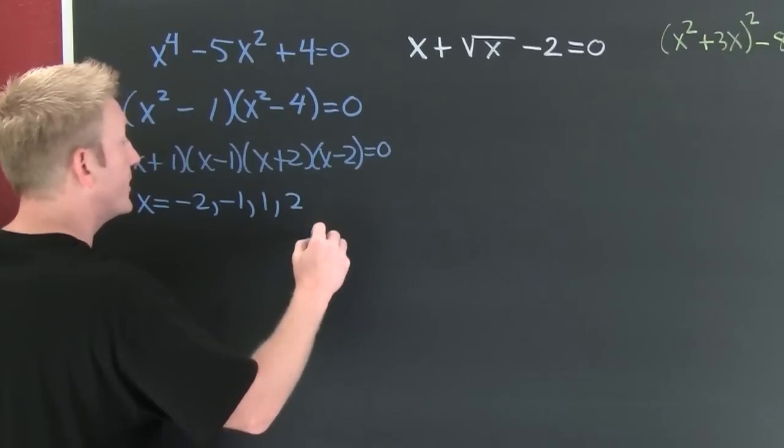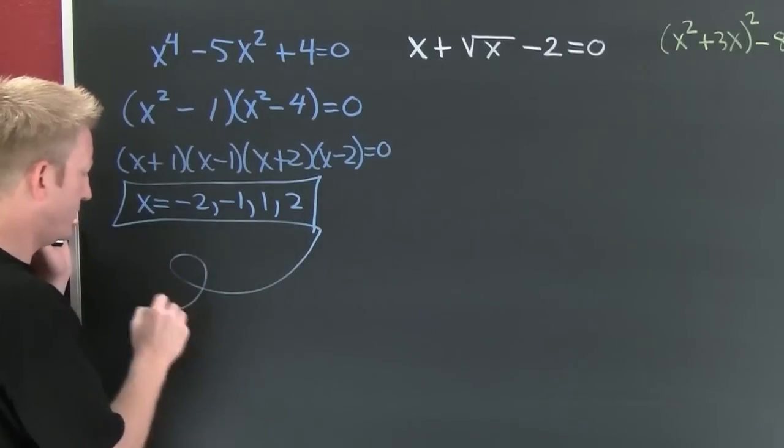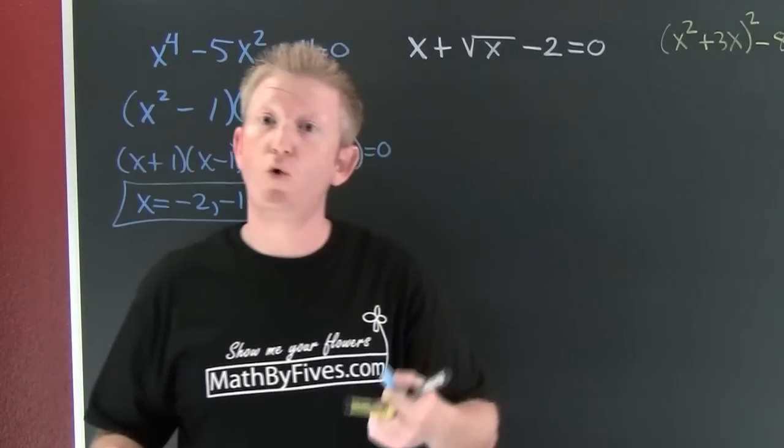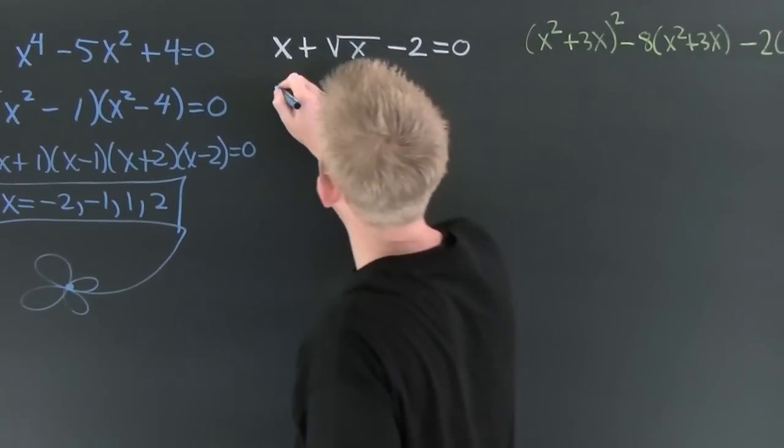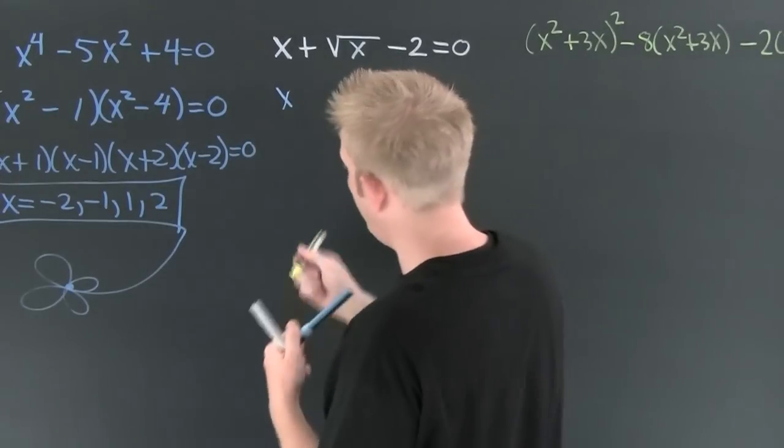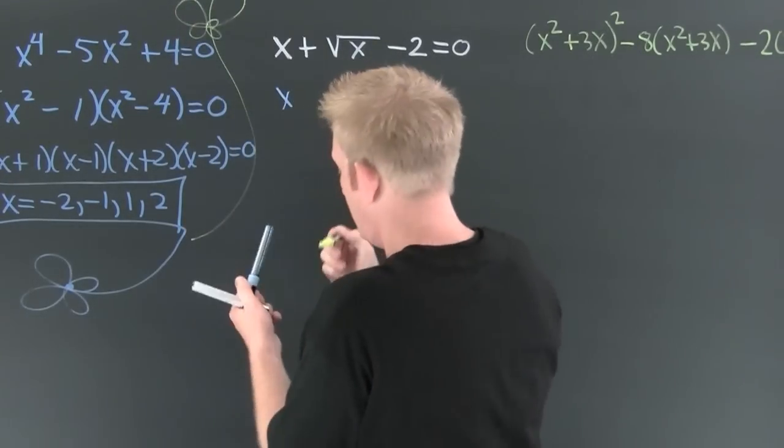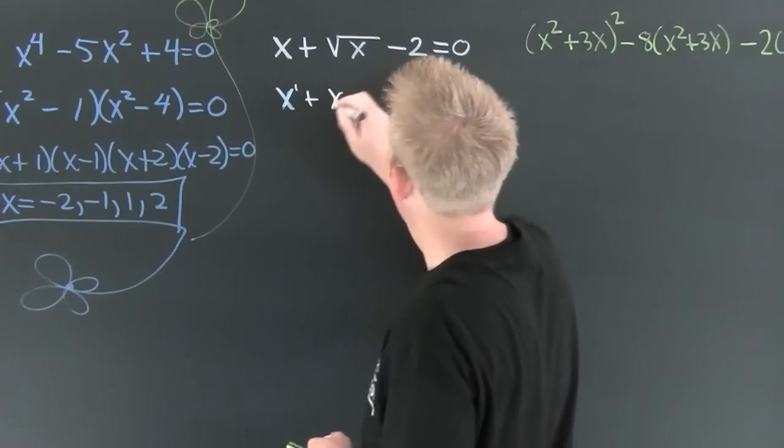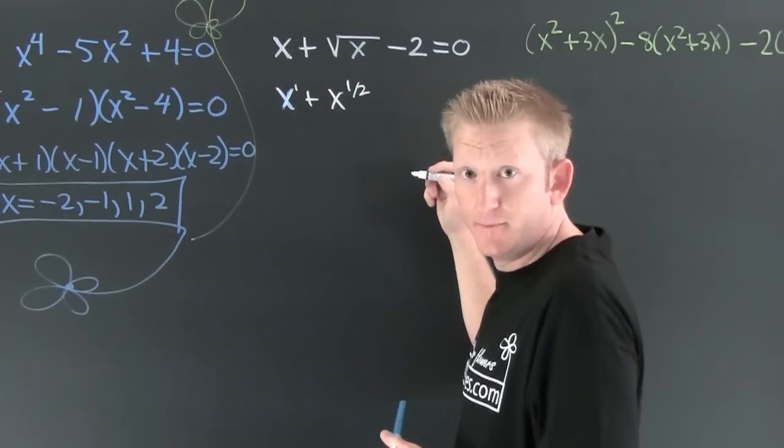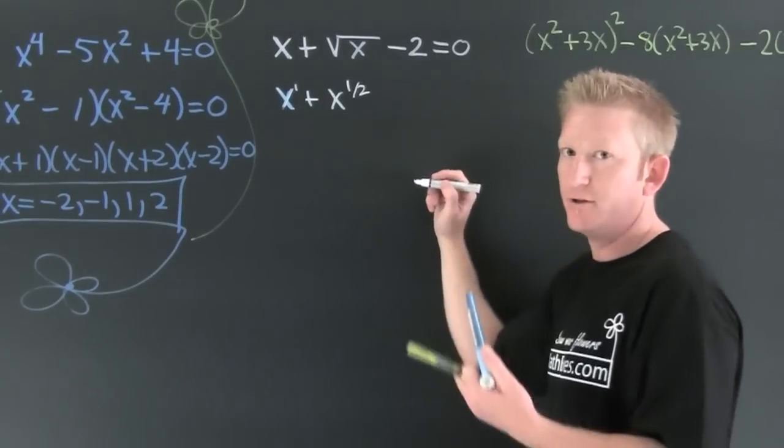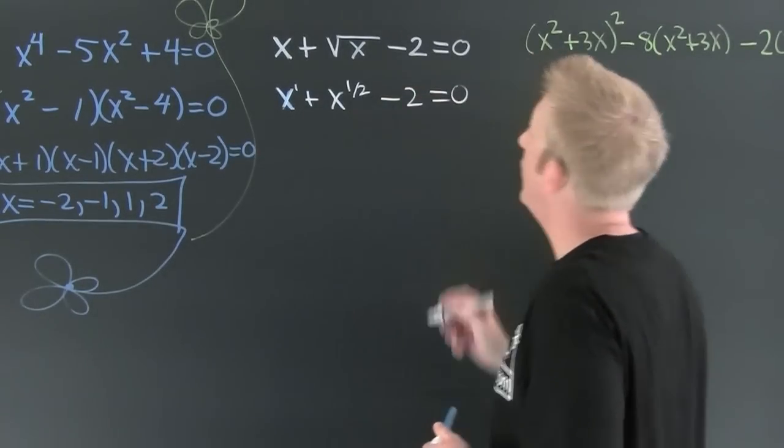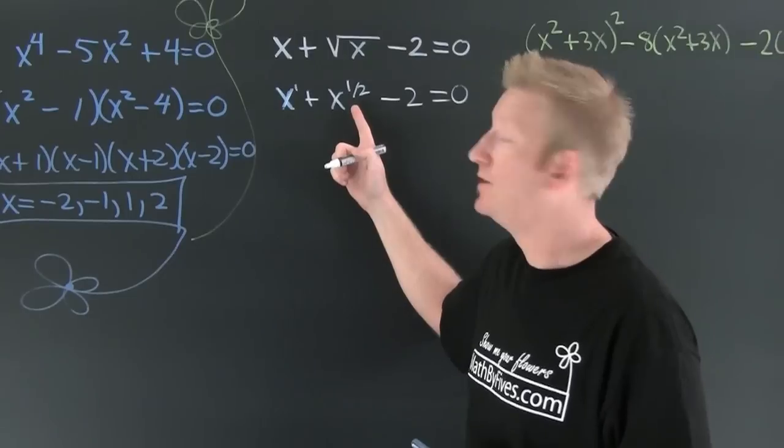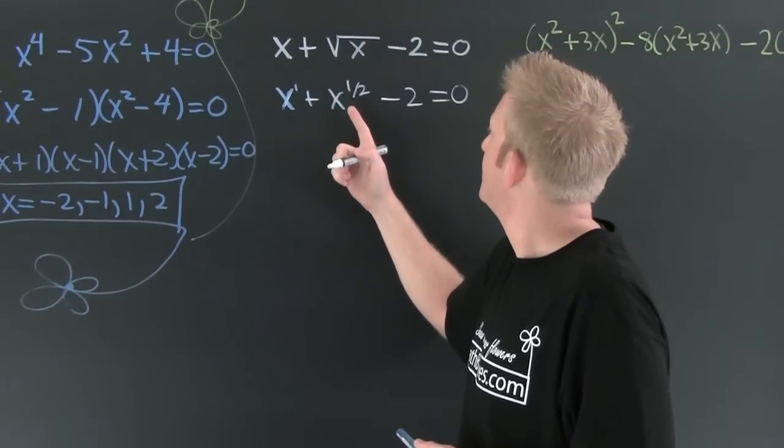Now I'm up here. I can see I can rewrite this as x to the first power plus x to the one-half power minus 2 equals nothing. Is this power twice that one? Indeed it is. One is twice one-half.